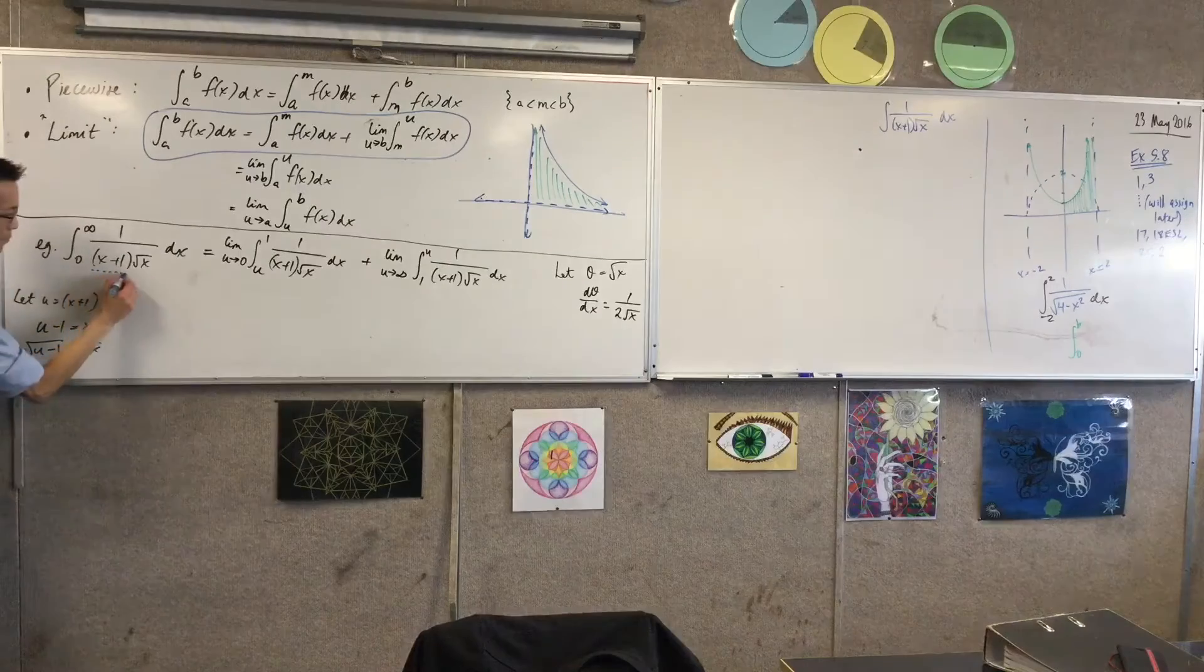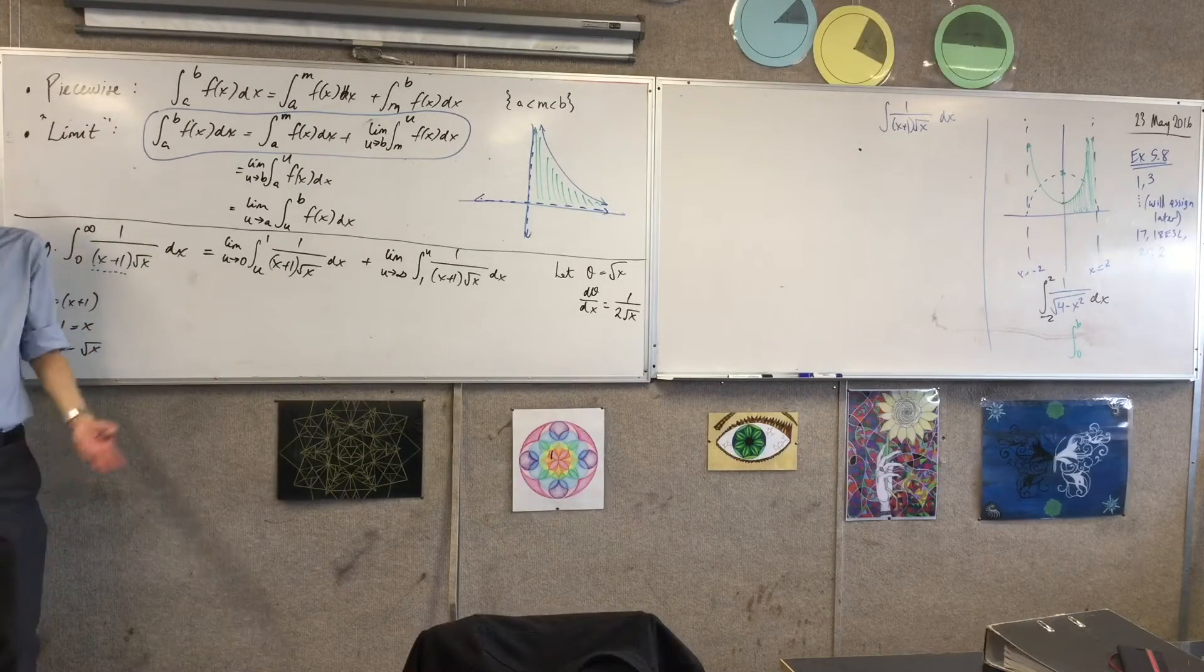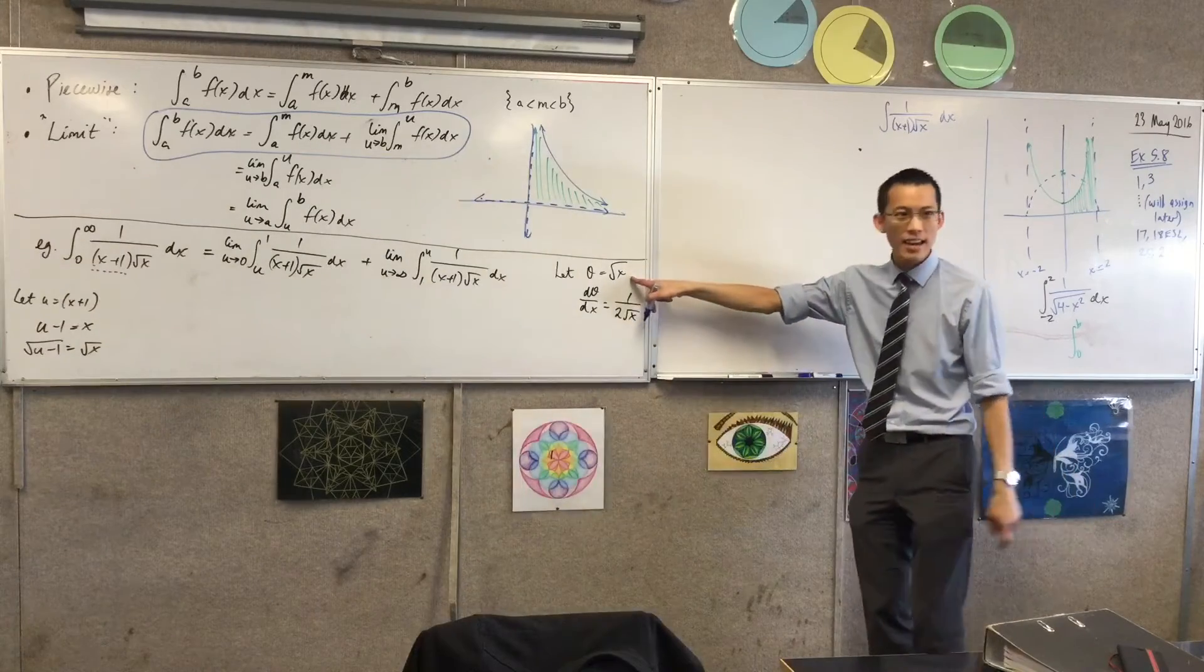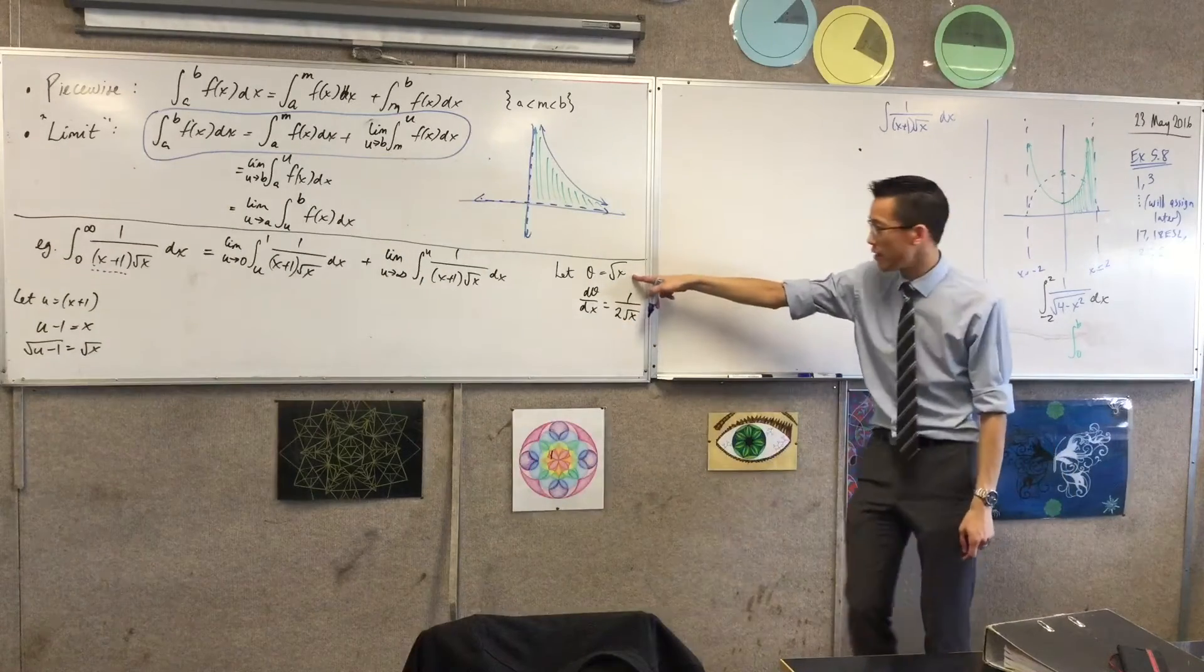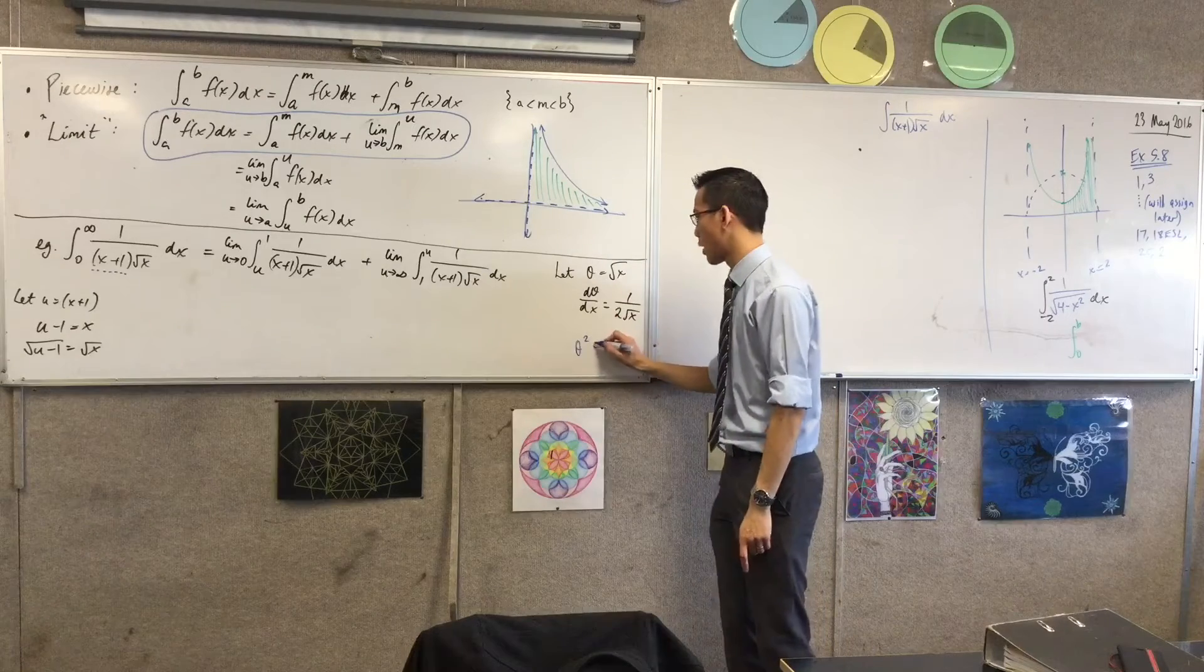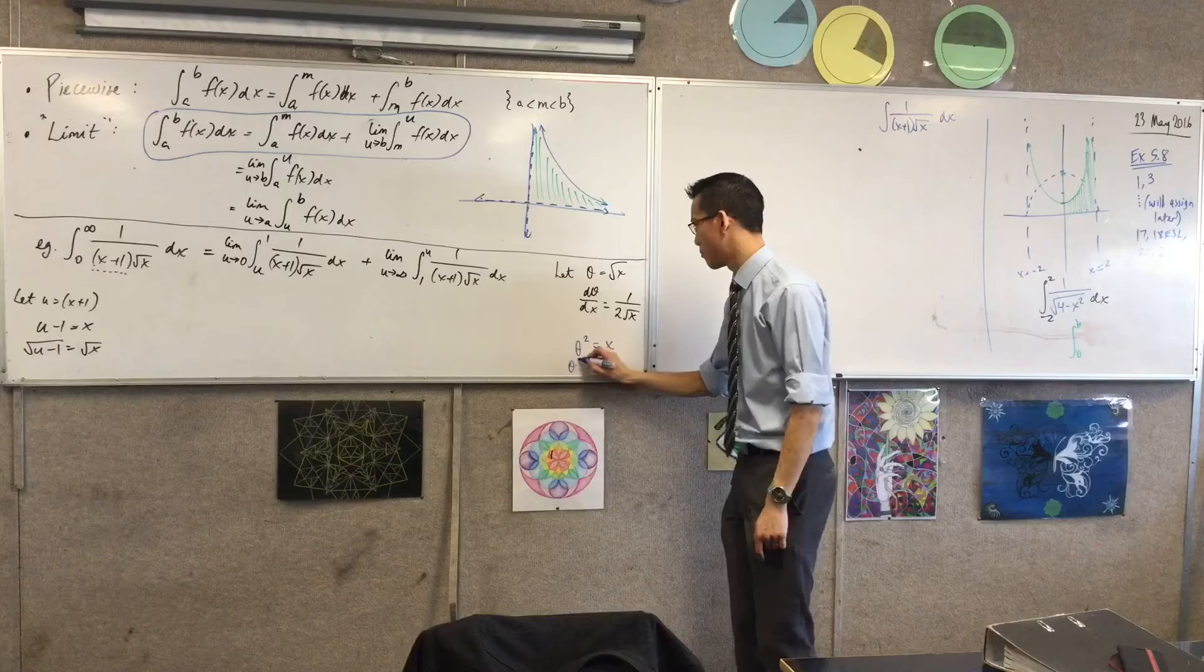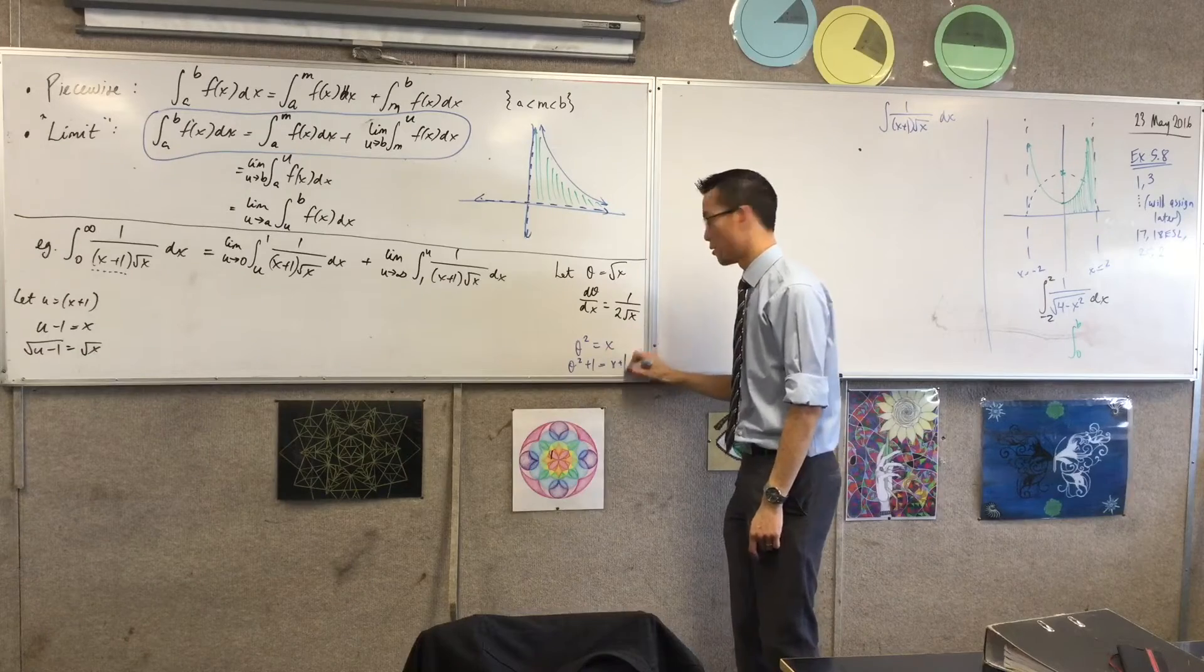But that leaves this guy, which is unchanged, right? So what is x plus 1? Theta squared plus 1. Yeah. To get an x plus 1 out of this, I have to square both sides, which will give me theta squared. And then I just have to add 1. Do you see that?